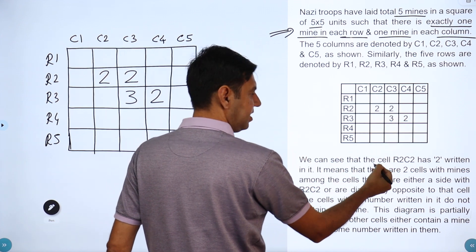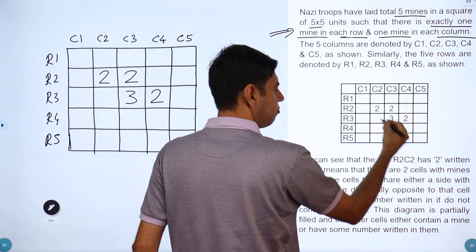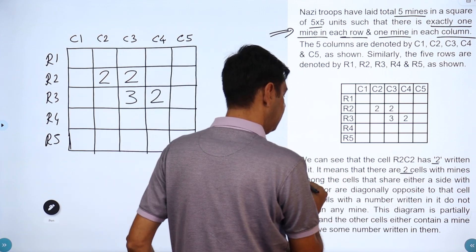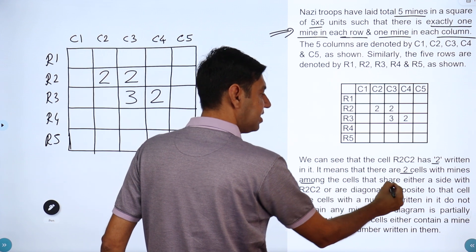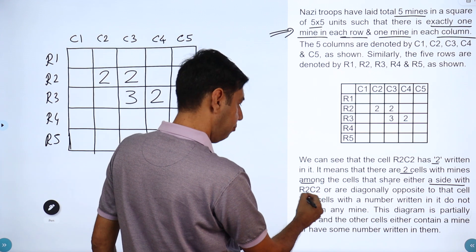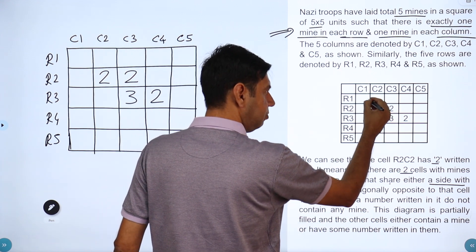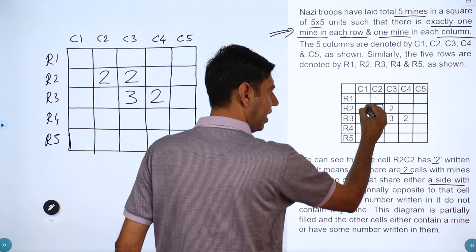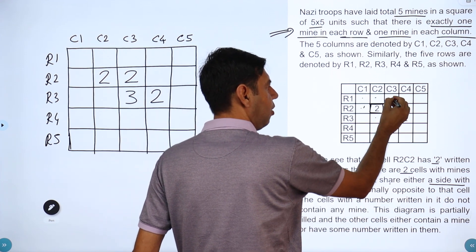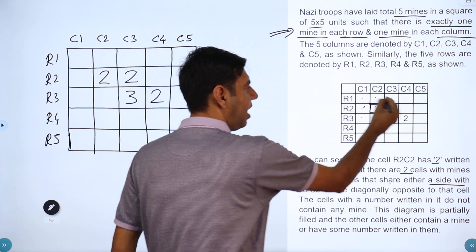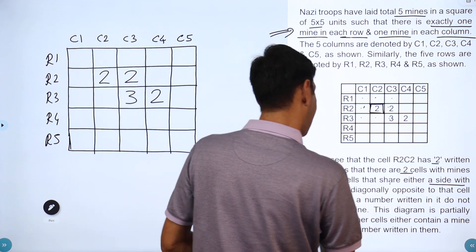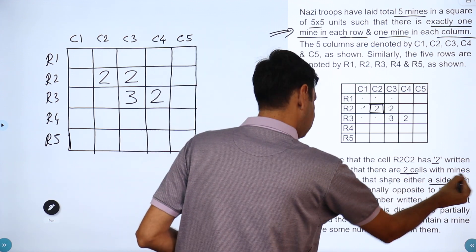We can see that the cell R2C2 has a 2 written in it. It means there are two cells with mines among the cells that share either a side with R2C2 - so these are the sides, one, two, three, four - or are diagonally opposite. The adjoining ones, there are two cells that have a mine.